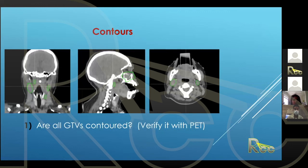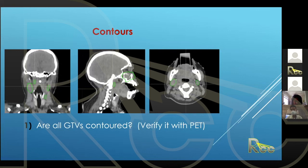Starting with all contours — are all GTVs contoured? There's a lot to contour in head and neck planning and it can easily be missed. It has happened enough times in my career that it requires very careful attention. If you have a PET or MRI at your institution, you can use that to verify it. Make sure that all the GTVs are contoured.